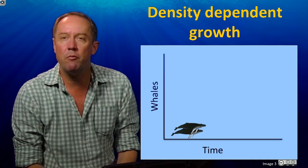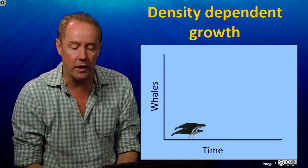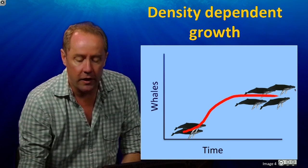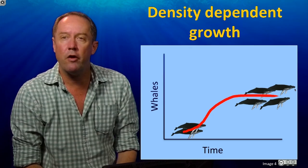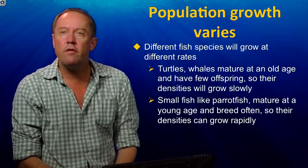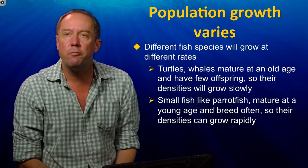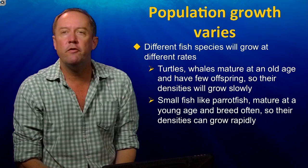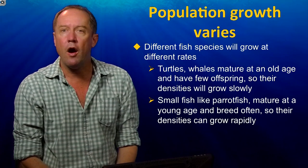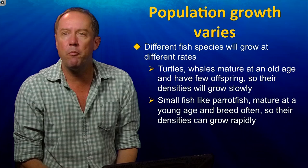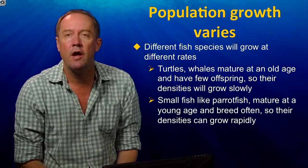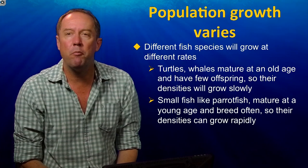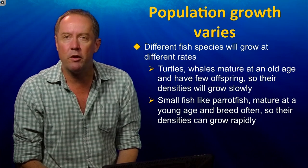Here we start again with a small population of whales, well below the carrying capacity. In this case, the density-dependent factors kick in, and the population stabilises at some reasonable level. The second thing we need to know is that different species of fish have different sorts of population dynamics. Species like turtles and whales, which mature at a large age, have populations that can grow very slowly. However, small-bodied fish, like parrotfish, and many invertebrates, have populations that can grow extremely rapidly.